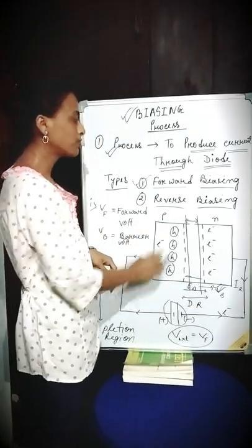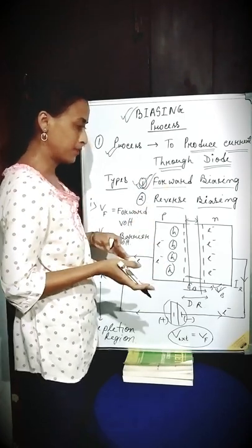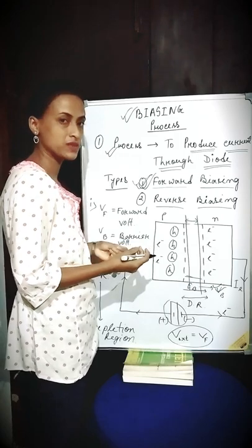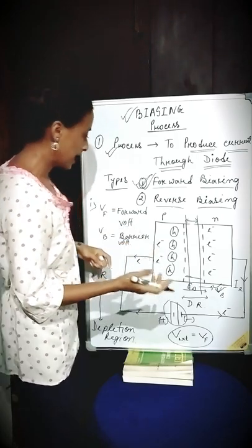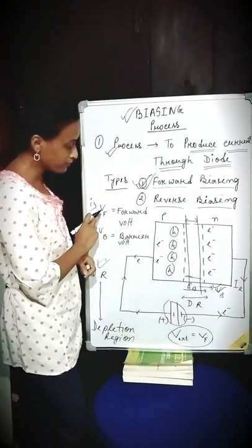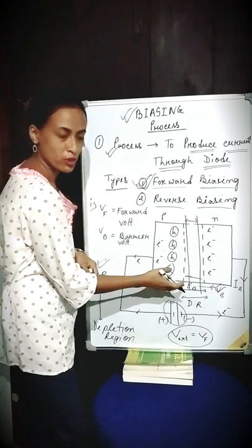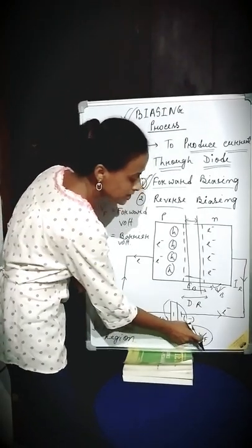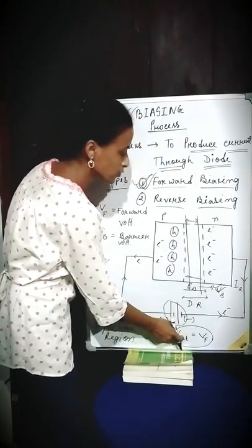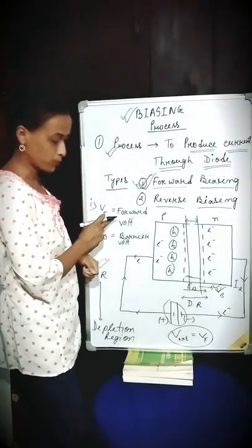This is the overall setup of the process known as forward biasing. In my next part of the video, I am going to discuss about the working principle of the forward biasing process. But before that, I want to explain what these terms are actually indicating. Here, VF indicates forward voltage. Since this whole setup is known as the forward biasing process, that's why the externally applied voltage is called forward voltage.